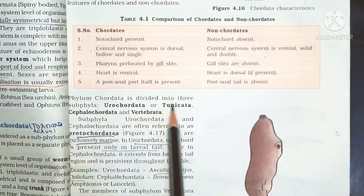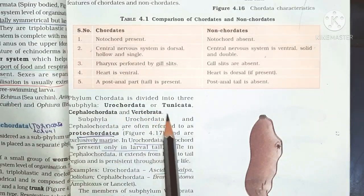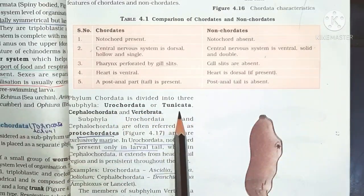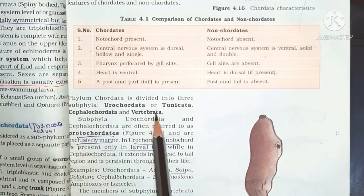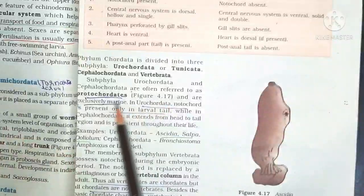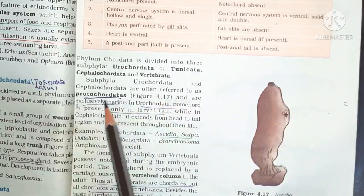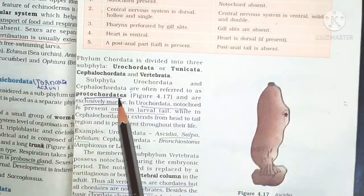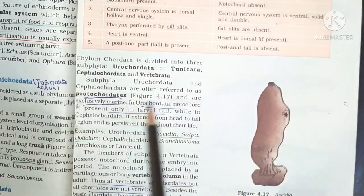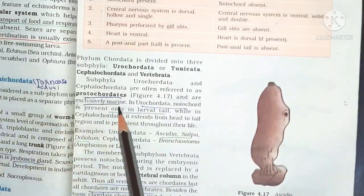Phylum Chordata is divided into three subphyla: Urochordata (Tunicata), Cephalochordata, and Vertebrata. Subphyla Urochordata and Cephalochordata are often referred to as Protocordates and are exclusively marine.